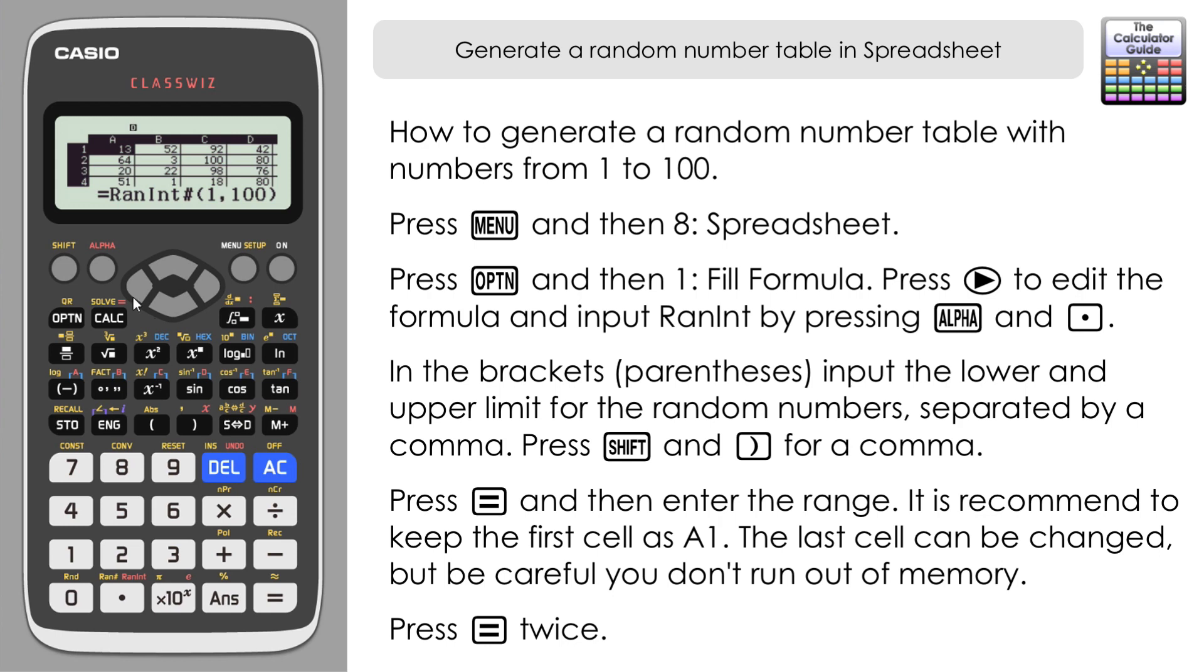I'm going to do A1 to D20, press Equals and then Equals to confirm. Just give it a moment and here we have our random number table. We can see that the spreadsheet has been populated with random numbers between 1 and 100 all the way down to row 20. You can see it stops there, nothing on row 21.